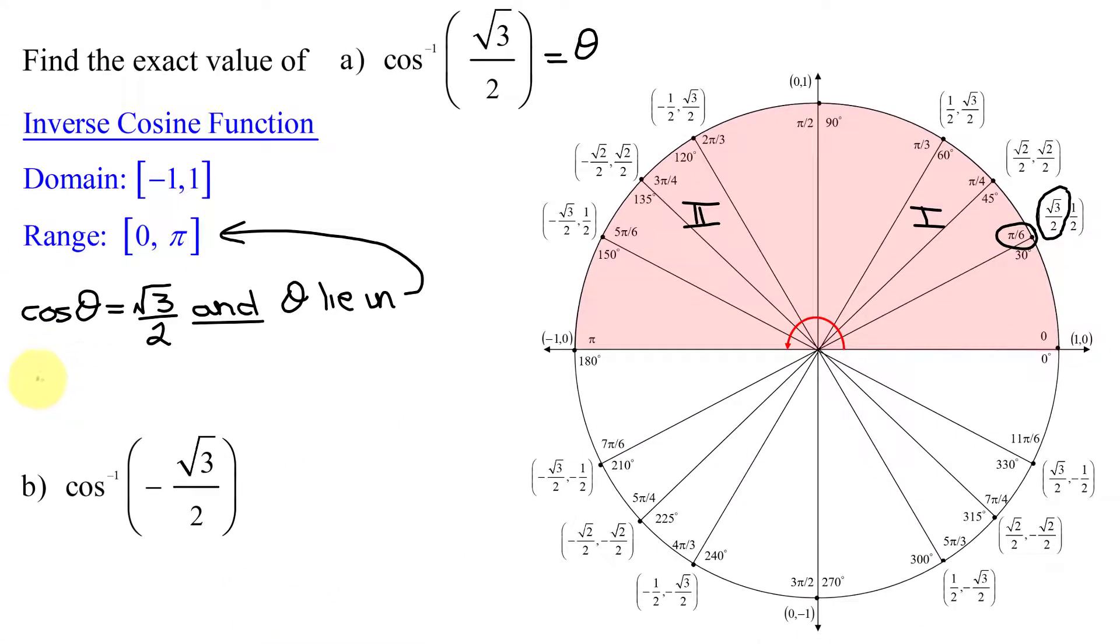So the inverse cosine of the square root of 3 over 2 equals this angle here, which is pi over 6, or in degrees, 30 degrees.